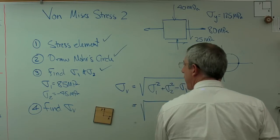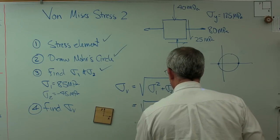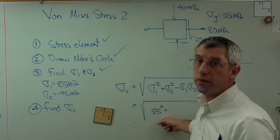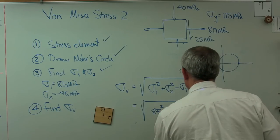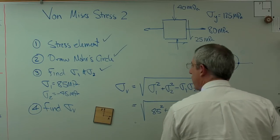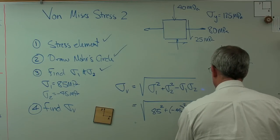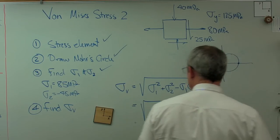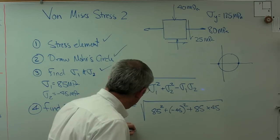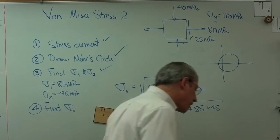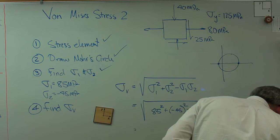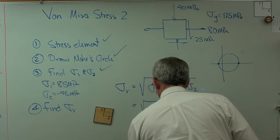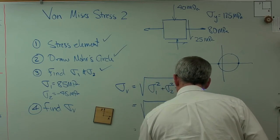So, let's see. I have that as 85 squared plus, now, I can say plus here because it's a negative number, but I'm going to square it. How about this? Minus 45 squared. That's probably a little better. Plus 85 times 45. And that's all going to be in megapascals. And when I work that out, carry that calculation out, I get, let's see, what did I get here? I got 114.3 megapascals.